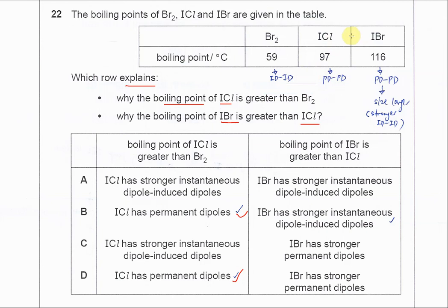Because the iodine and chlorine, iodine and bromine, they have different electronegativity. So since they have the same PD-PD, now the main difference is not the PD-PD, it's about the size.